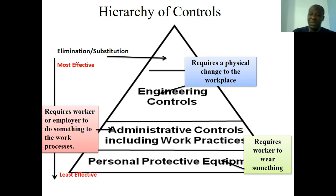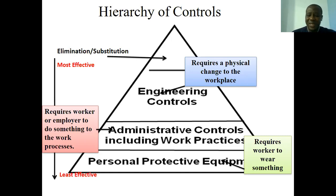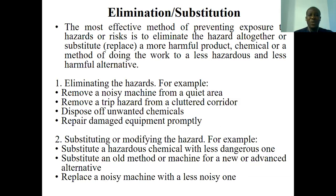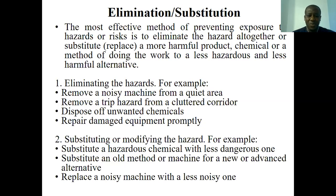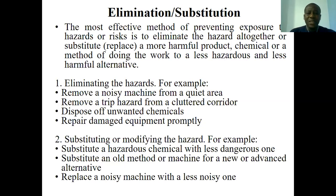Administrative controls involve instituting policies and procedures that help people adjust to their work location. The last option is personal protective equipment, which is the least effective. To eliminate hazards, for example, you may want to remove a noisy machine from a quiet area, dispose of unwanted chemicals, repair damaged equipment promptly, or remove a trip hazard from a cluttered corridor. For substitution, you might replace an old machine with a new or advanced one, replace a noisy machine with a less noisy one, or substitute a hazardous chemical with a less dangerous one.